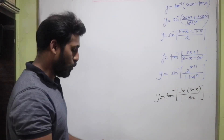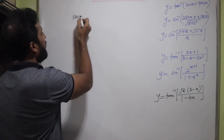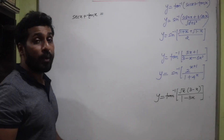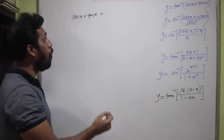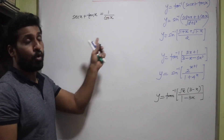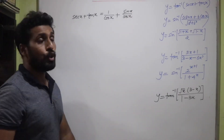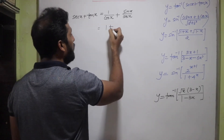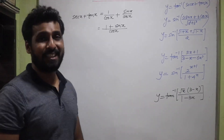Let's simplify sec x + tan x. We know sec x = 1/cos x and tan x = sin x/cos x. Since they share the denominator cos x, we write (1 + sin x)/cos x. Now we need the half-angle formulas — the formulas of trigonometry should be known like the back of your hand.